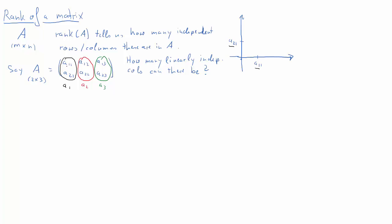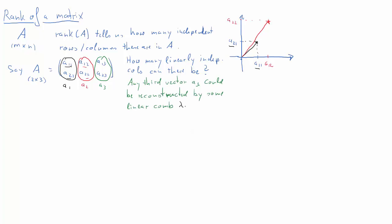The first column vector has coordinates A11 and A21 — that's the black vector. The second column vector A2 has coordinates A12 and A22 — those are the red coordinates delivering vector A2. Any third vector A3, being two-dimensional, can be represented as a linear combination of the first two 2×1 vectors: lambda 1 times A1 plus lambda 2 times A2. This implies that the maximum number of linearly independent columns we can have in matrix A is two.